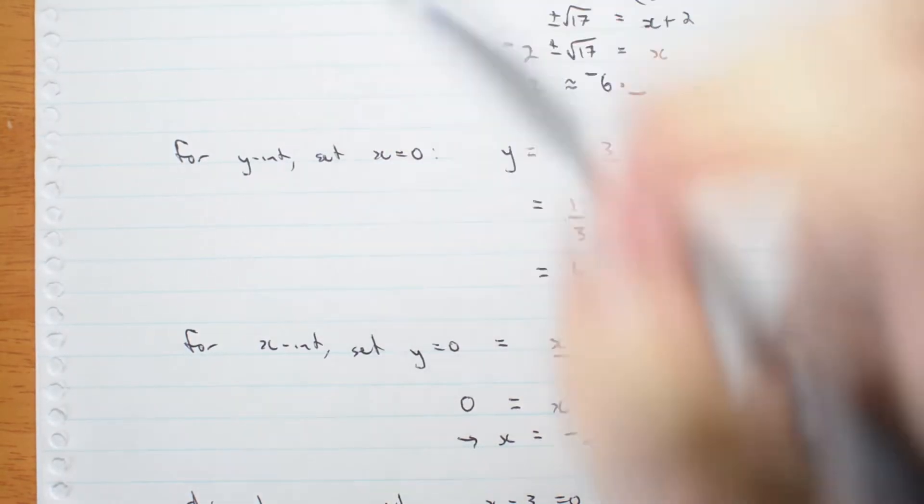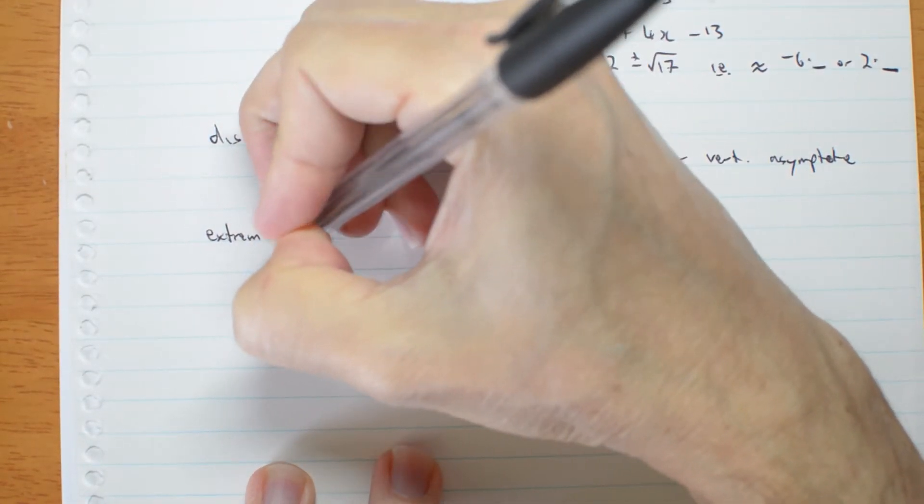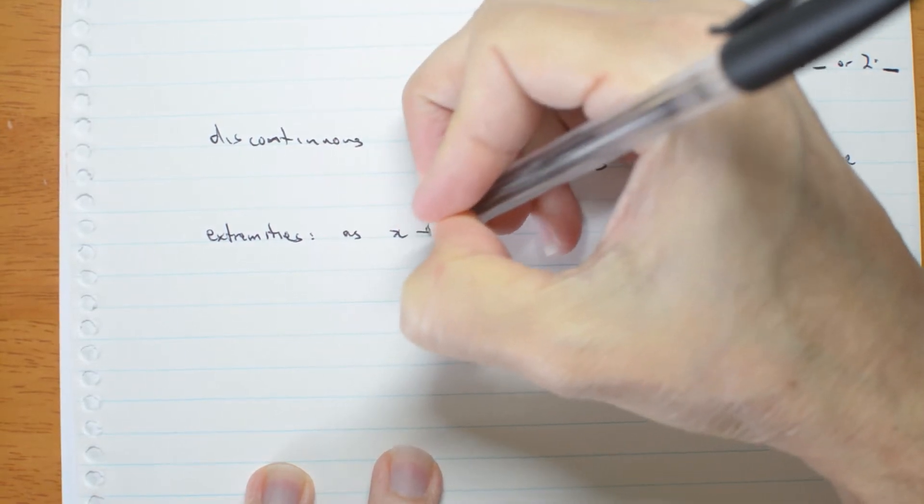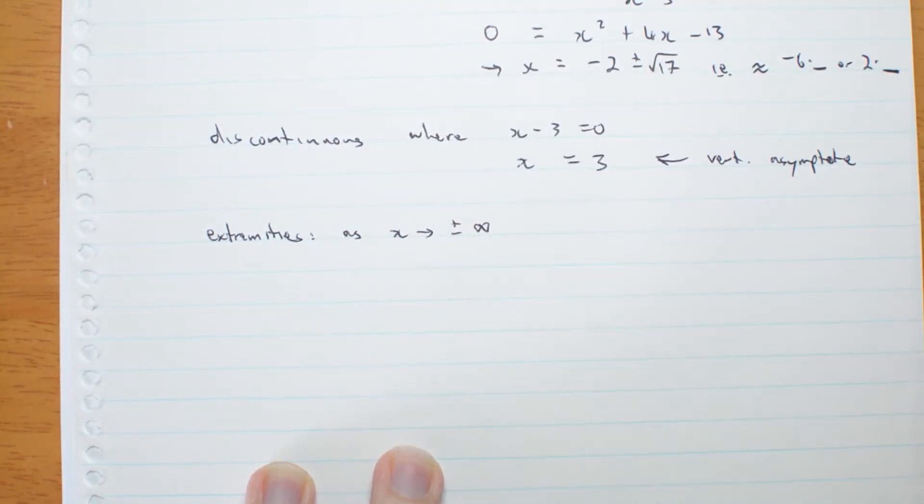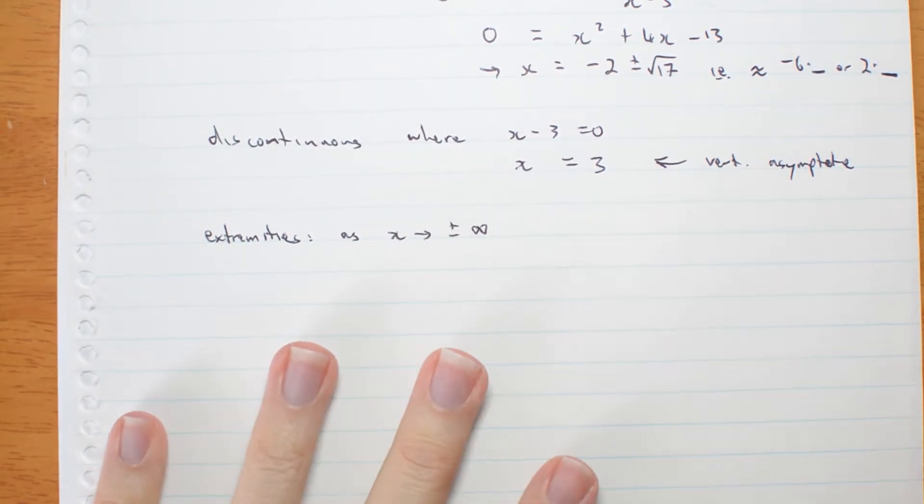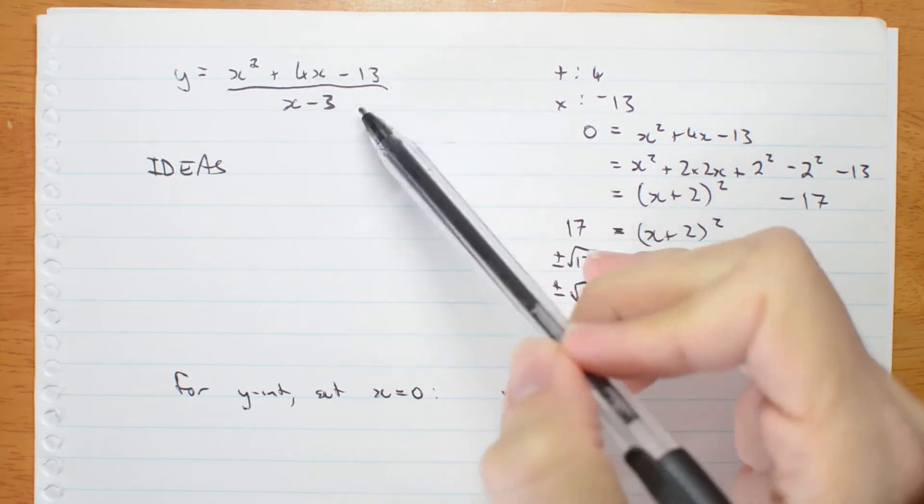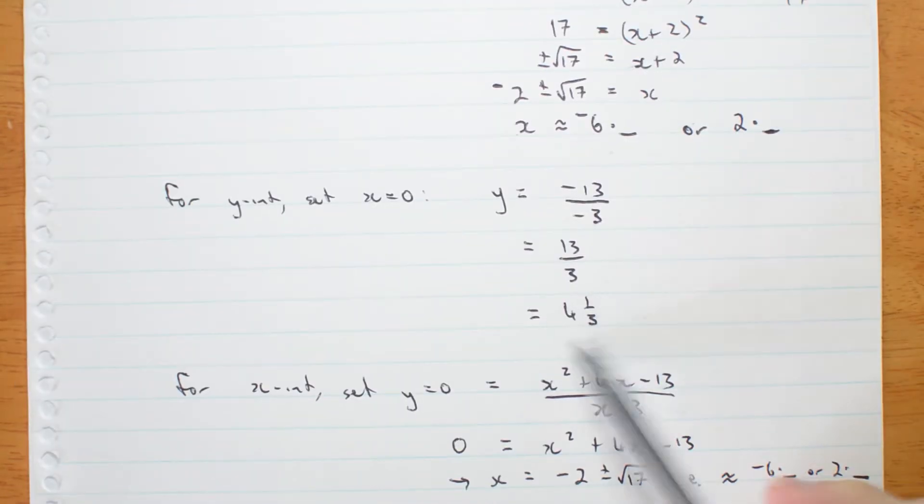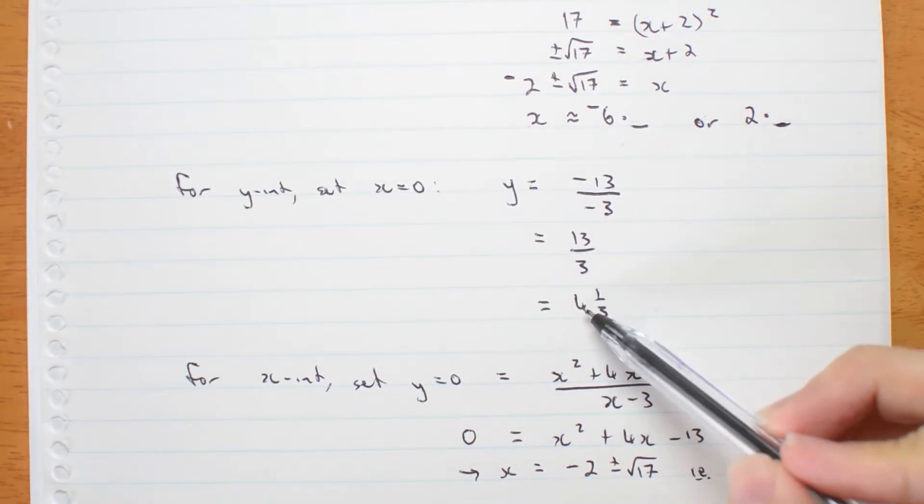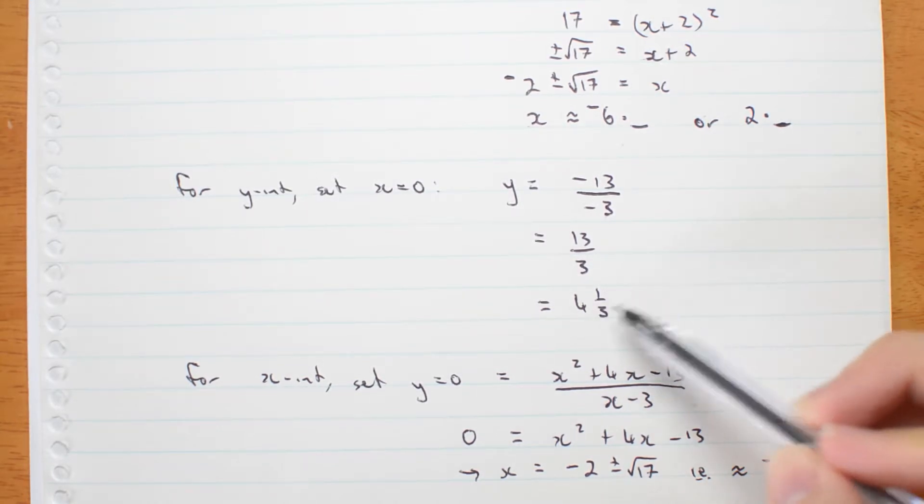Extremities, this is where the fun starts. As x approaches plus or minus infinity, what's going to happen to my graph? Now the easiest way to work it out is actually to turn this essentially an improper fraction into a mixed number. The whole part, which won't really be whole, it still has an x in it, will give me the linear asymptote and the remainder will be essentially negligible compared to that. So let's try.